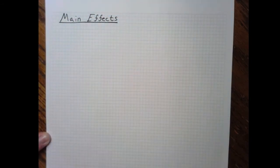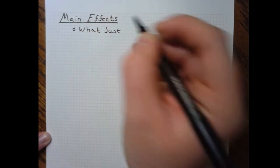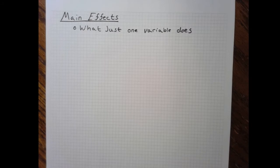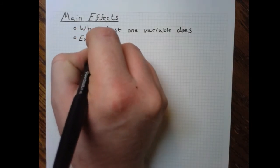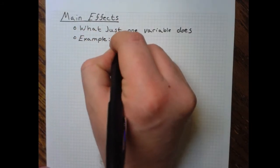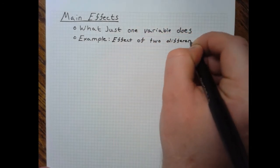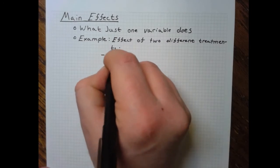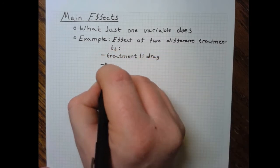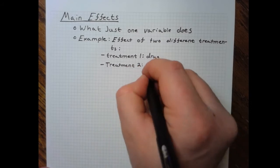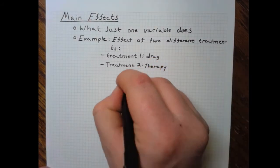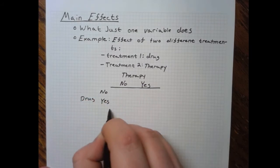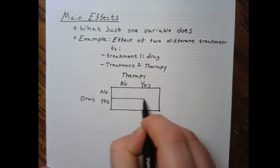Let's look at main effects in a bit more detail — this is just what one variable is doing all by itself. Let's work with a simple example: two different treatments for something like depression. Treatment one is a drug, and treatment two is a therapy — say, cognitive behavioral therapy. We can diagram this out in a matrix showing two levels of each: yes or no for the drug, and yes or no for the therapy.